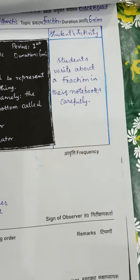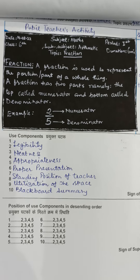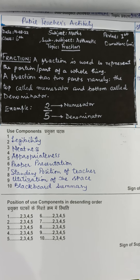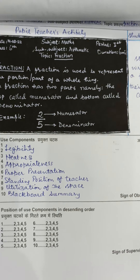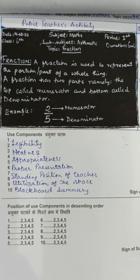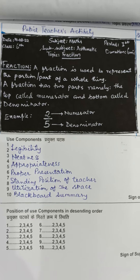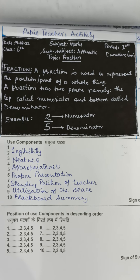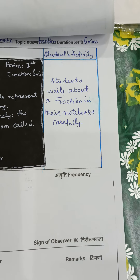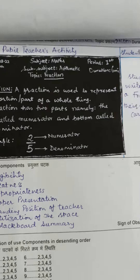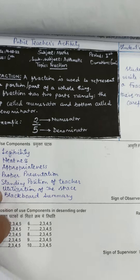After explaining, the teacher writes on the board — this is the blackboard skill. Keep in mind this all takes only six minutes. On the blackboard, we first label it properly: the date, class, subject, sub-subject, topic, period, and duration. We write a brief definition of a fraction, then show the parts: the upper part is called the numerator and the lower or bottom part is called the denominator. Students write this neatly in their notebooks.